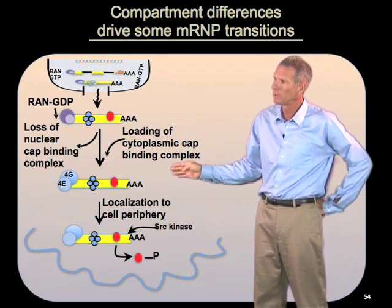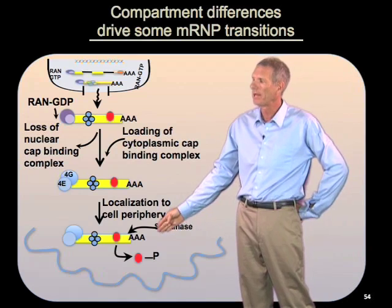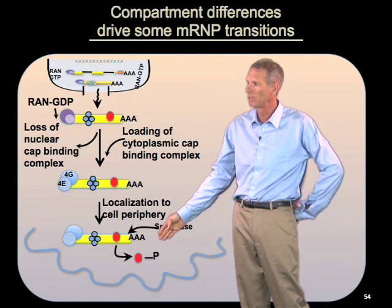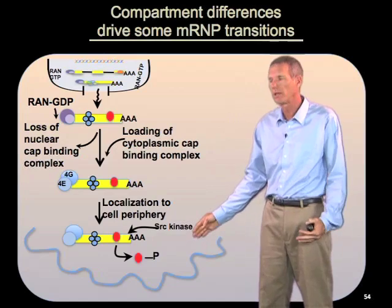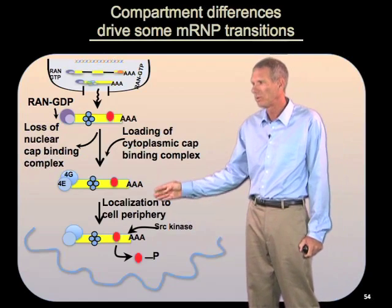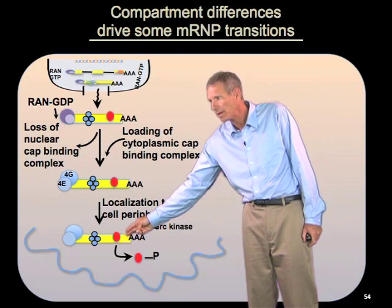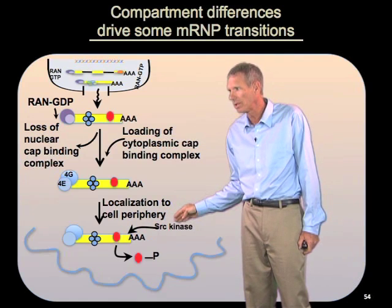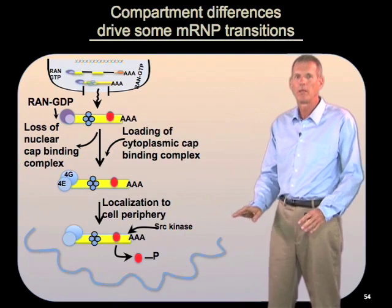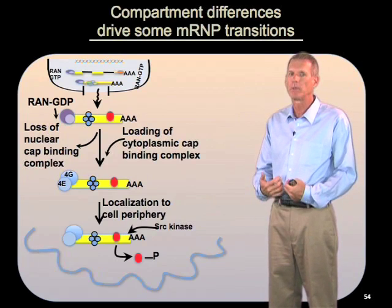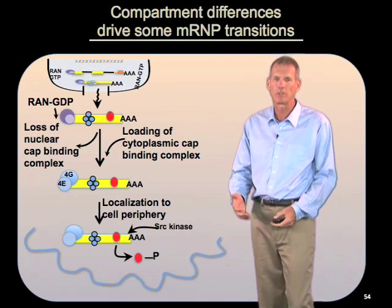Similarly, localization to specific subcellular regions can affect the exchange of proteins. For example, the beta-actin mRNA, which is targeted to the leading edge of a crawling fibroblast, when it reaches out there, a protein which targets it there called the zip code binding protein is phosphorylated by the Src kinase, which is localized to that part of the cell, and is caused to be released from the mRNA. Simply because different compartments in the cell have different biochemical properties, that can change the proteins associated with the message at different places within the cell.